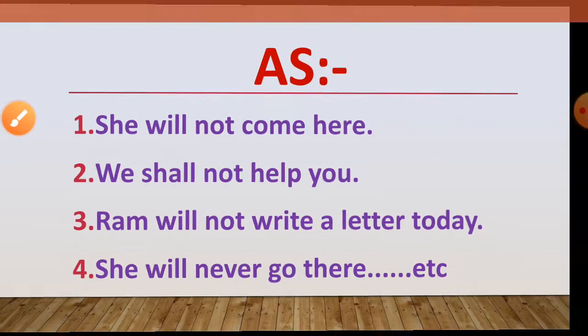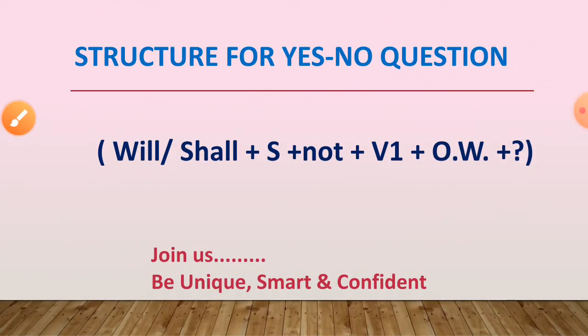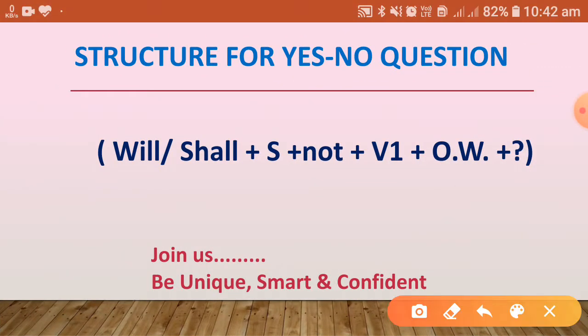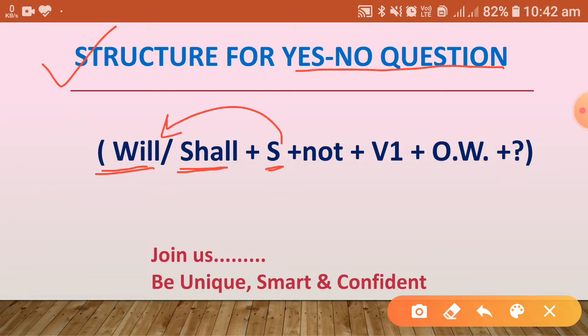Let us see the next structure — structures for Yes/No questions. The structure is: Helping Verb (will/shall) + Subject + (not, if negative) + First Form + Other Words + Question Mark. First we use the helping verb, then the subject, then 'not' only if the sentence is negative, then the first form of the verb, then other words, and finally a question mark.